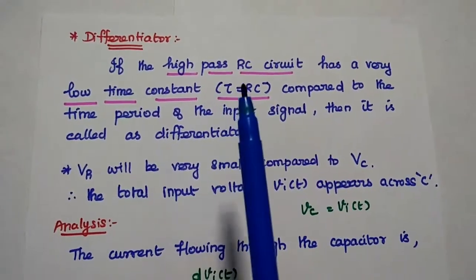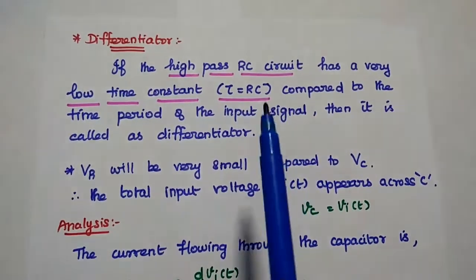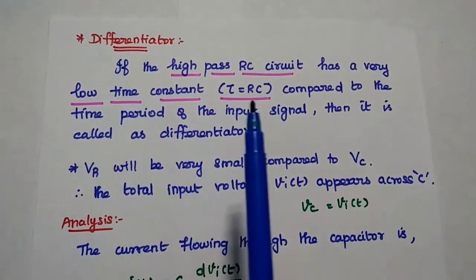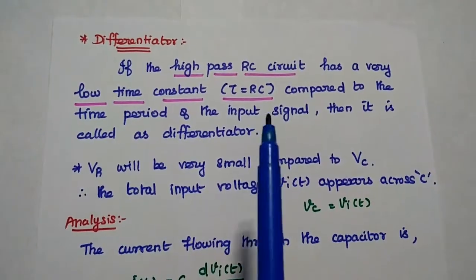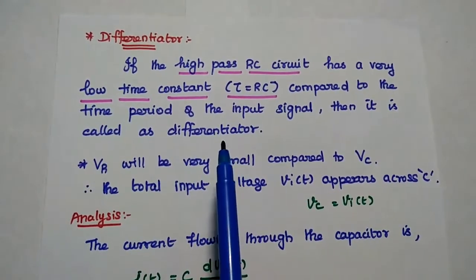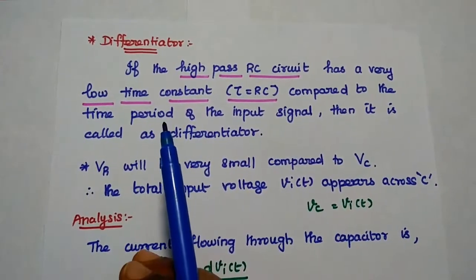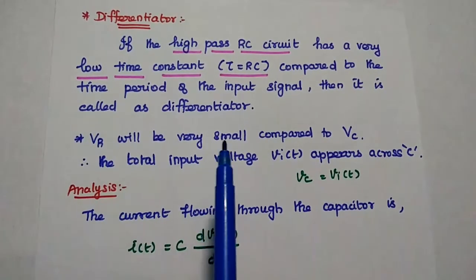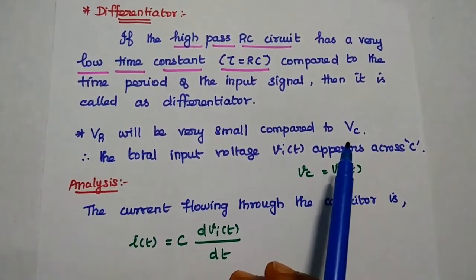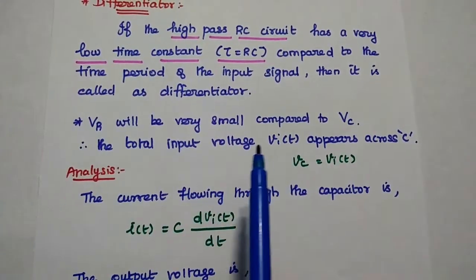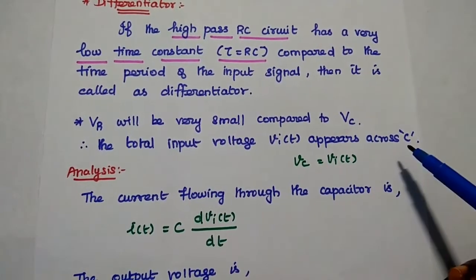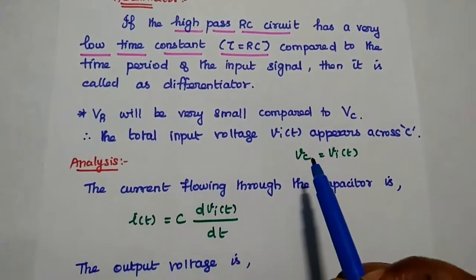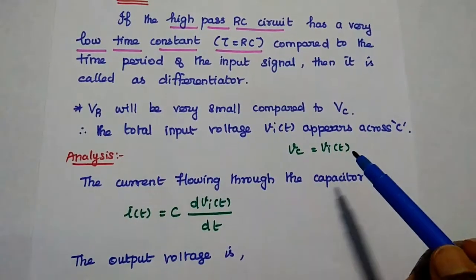Next, we are going to discuss how this high pass RC circuit acts as a differentiator. If the high pass RC circuit has a very low time constant compared to the time period of the input signal, then the circuit is called a differentiator. For a differentiator, the time constant is very low. In this case, the voltage drop across the resistor will be very small compared to the voltage drop across the capacitor. Therefore, the total input voltage appears across the capacitor. We can simply ignore the Vr value because it is very small. Then we get Vc equal to simply the input voltage Vi of T.